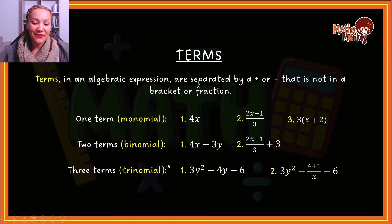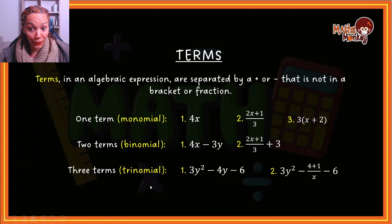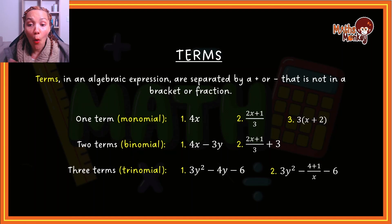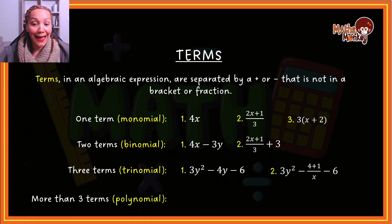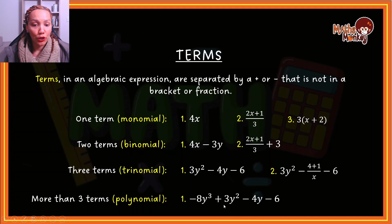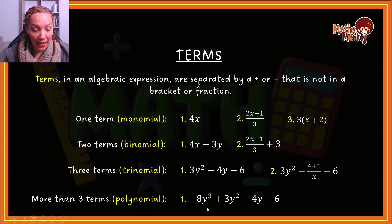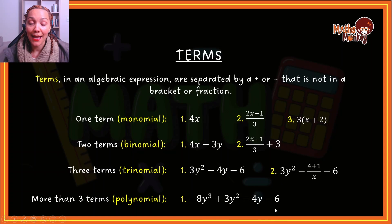We have specific names for when it's one term, two terms, or three terms. Then if there are four or more terms, we call that a polynomial. So this is simple to identify — you just look at the pluses and minuses, and whatever values and variables are between these will tell you what the term is. So one term, two terms, three terms, and four terms give you a monomial, binomial, trinomial, and polynomial respectively.